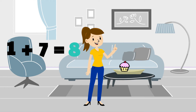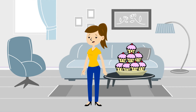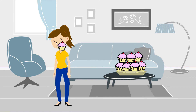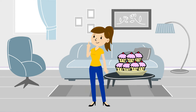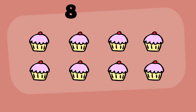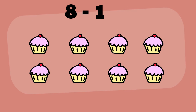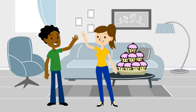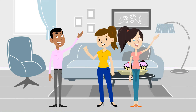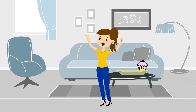Now Jen got very hungry, so she ate her cupcake before any of her friends arrived. How many cupcakes are left? Since there are eight cupcakes and Jen ate one, eight minus one equals seven. Seven cupcakes are left.